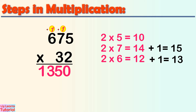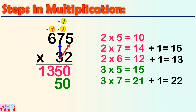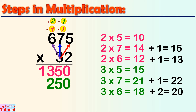Now we move on to the 10s digit of the multiplier. 3 times 5 equals 15. Go to the second column of the product. Leave the 1s digit blank or simply write 0, then write 5 down and carry over 1. 3 times 7 equals 21, plus 1 equals 22. Write 2 down and carry over 2. Write 20 alongside the second partial product.